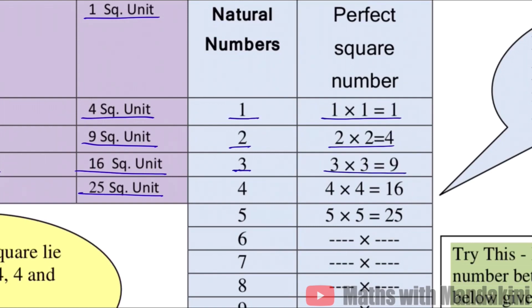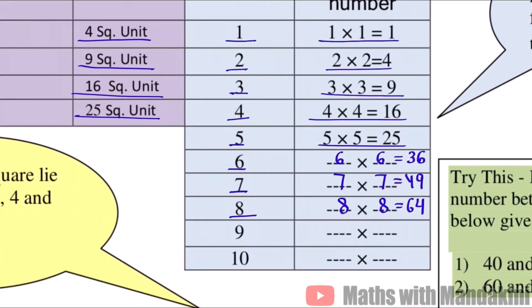3 into 3 is 9. In every step we are going to multiply the number with the number. 4 into 4 is 16, 5 into 5 is 25. Now, natural number 6, 6 into 6, the answer is 36. 7 into 7, the answer is 49. 8 into 8, the answer is 64. And then we have 9, 9 into 9 is 81. And for 10, it is 10 into 10, that is 100.